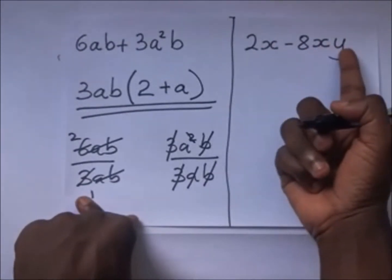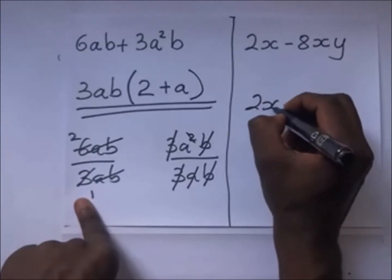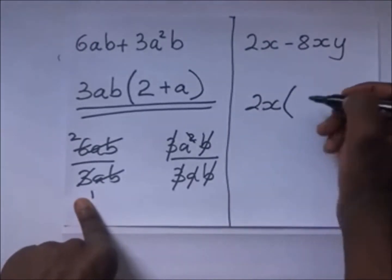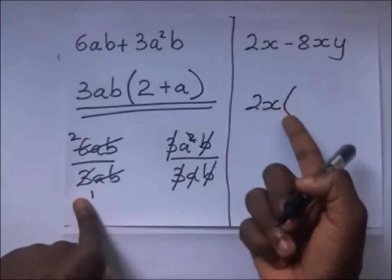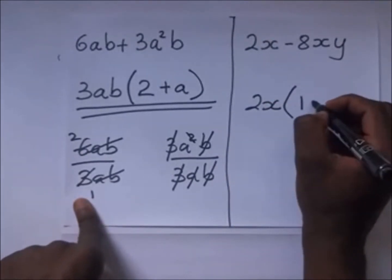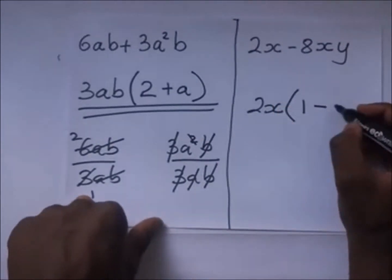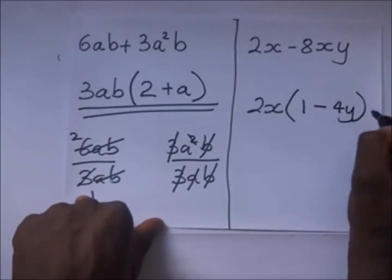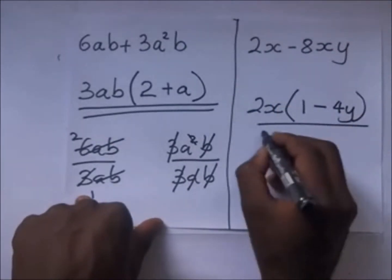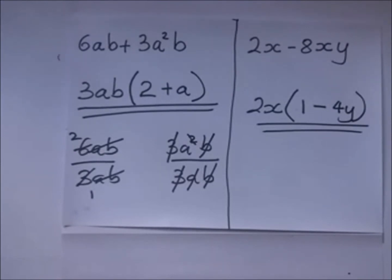Then we come to this one: 2x minus 8xy. The common factor is 2x, so you put 2x outside the brackets. 2x divided by 2x gives 1, then minus 8xy divided by 2x gives 4y. So the answer is 2x(1 − 4y). We have factorized this.